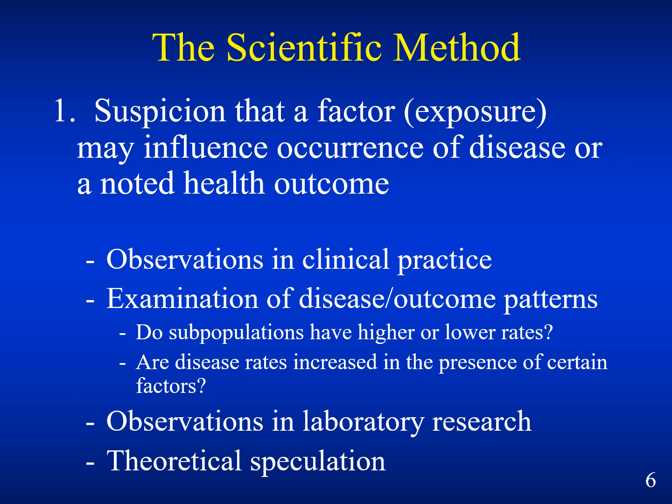The scientific method has a suspicion that a factor — this is your exposure — may influence the occurrence of disease or a noted health outcome. These are usually observations in clinical practice, examination of disease outcome patterns. Do some populations have higher or lower rates? Are disease rates increased in the presence of certain factors? Or observations in laboratory research or theoretical speculation? For example, the novel coronavirus is a very young virus, so we have lots of things to observe.